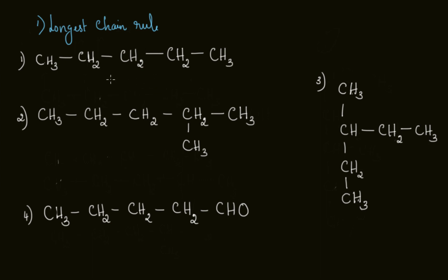When numbering carbon atoms, we always start from one of the corners — never from the middle. We can start from one end to the other, or from the other end back. For a simple straight chain like pentane, numbering from either direction gives one, two, three, four, five — it's a five-carbon chain, all carbon-carbon single bonds, and the name is pentane regardless of direction.